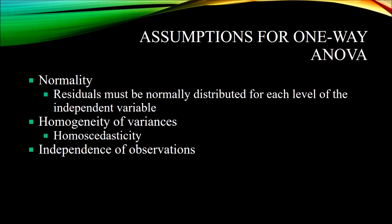Now let's take a look at the assumptions for a one-way ANOVA. Every time we want to analyze data with an inferential statistic, those data have to meet certain assumptions. There are three assumptions for one-way ANOVA. The first is normality: the residuals must be normally distributed for each level of the independent variable. So in the example of CBT, psychodynamic, and the control group with depression as the dependent variable, the residuals for each of those three groups must be normally distributed — that's three tests of normality, one for each level of the independent variable.